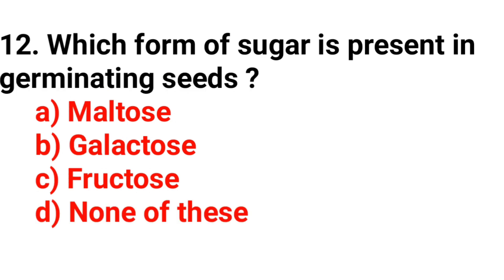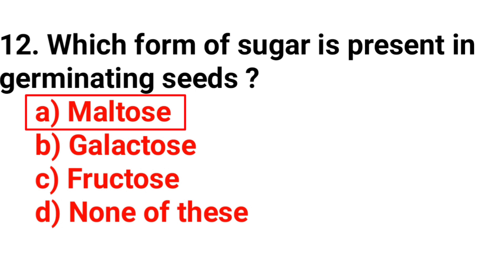Question number twelve: Which form of sugar is present in germinating seeds? The answer is option A, maltose.